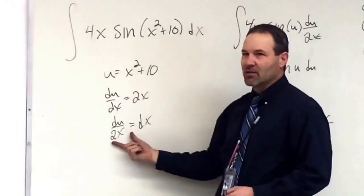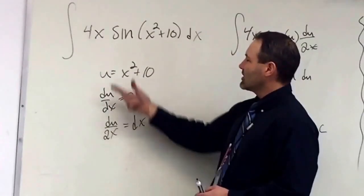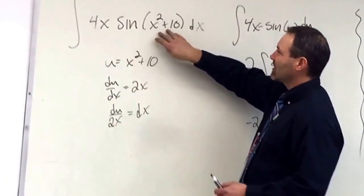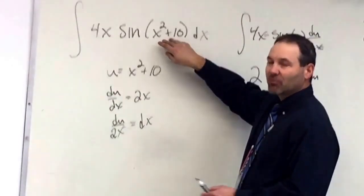We eventually divide by the derivative, right? Because x squared would be... we would be dividing by 4, and we'd end up with a sine of x squared plus 10 in our problem, plus some u stuff.